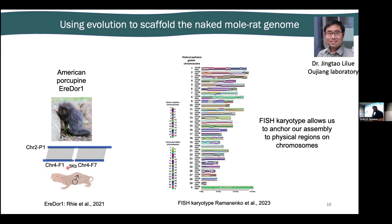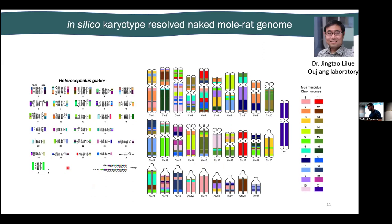Fortunately, in November, a fluorescence in situ hybridization (FISH) karyotype of the naked mole rat genome was also published. So we were able to use basically markers of physical contact between our assembly and this karyotype, letting us place centromeres — which is effectively impossible to do with the data we have alone. This is what our assembly looks like; just focusing on chromosome one, we took advantage of this physical and evolutionary information to build an in silico karyotype of our assembly.